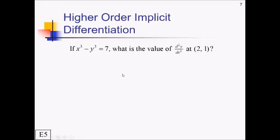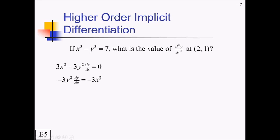We'll do one more problem. If x³ minus y³ equals 7, we want the value of the second derivative at (2, 1). We'll use implicit differentiation. Going left to right: 3x² minus 3y²(dy/dx) equals 0. Isolating dy/dx — subtracting 3x² and dividing by negative 3y² — the negatives cancel, giving dy/dx equals x²/y².